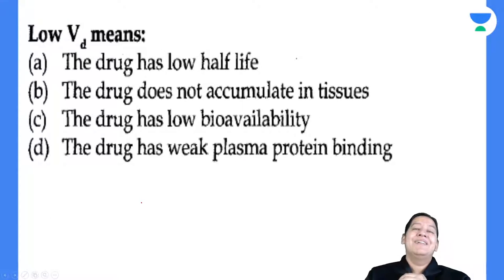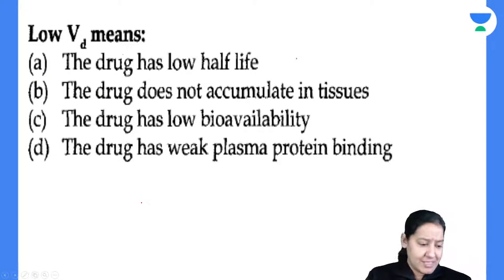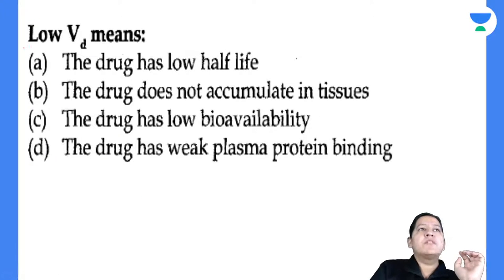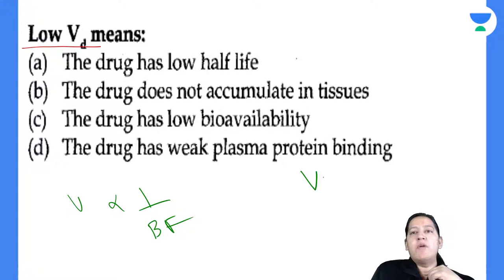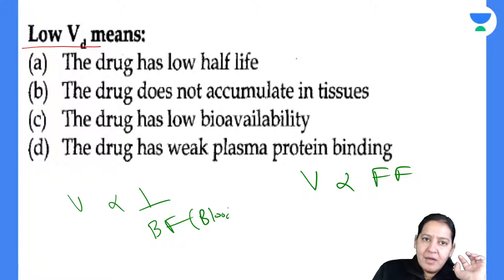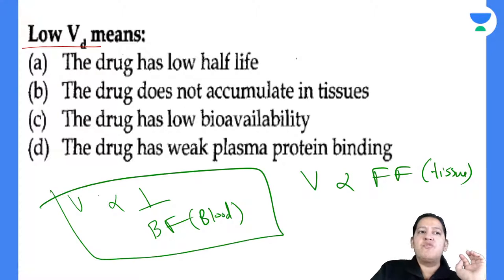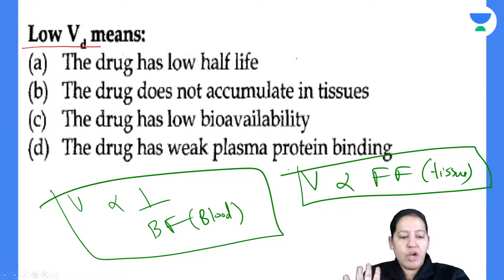Coming to the next question: low volume of distribution — apply the two formulas. Volume of distribution inversely proportional to bound form, directly proportional to free form. Examiner wants low VoD — so bound form is high, free form is low. Low free form means low tissue accumulation. Read options: does not accumulate in tissue — yes, B is the correct answer. Weak plasma protein binding — no, that is reversed; low VoD means high plasma protein binding. Correct answer is B.